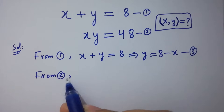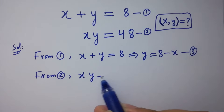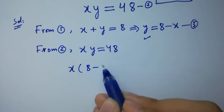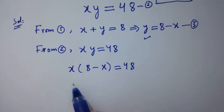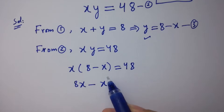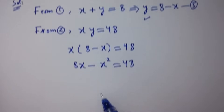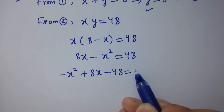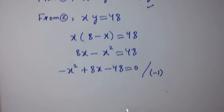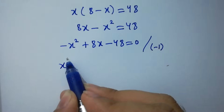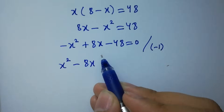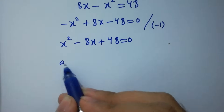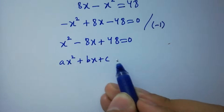From equation 2, we have x times y equal to 48. Put the value of y: x times (8 minus x) equals 48. So 8x minus x squared equals 48, giving minus x squared plus 8x minus 48 equal to 0. Dividing by minus 1 on both sides: x squared minus 8x plus 48 equal to 0. This is a quadratic equation of the form ax squared plus bx plus c equals 0.